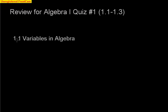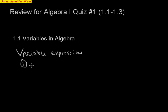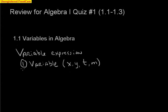In section 1.1, we talked about variables in algebra, and the very first thing we talked about was having a variable expression. A variable expression has three main components. Number one, it's got to have a variable — a variable is any letter that represents a number. So X, Y, T, M — those are all variables. You can pick any letter of the alphabet.